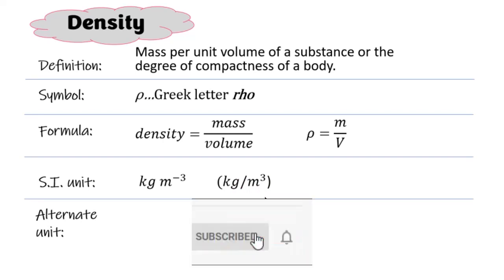Now for some quantities there is an alternate unit that is used. Because kilograms per cubic meter is a large unit, when we need to take into consideration smaller measurements, we use grams per cubic centimeter. Now while it is acceptable, if you're asked a question to represent the density in SI units, you would have to use kilograms per cubic meter.